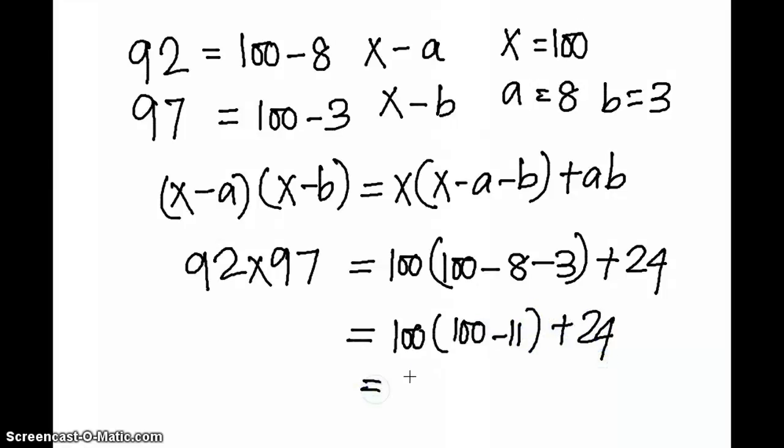This gives me 8,900 + 24, which is 8,924. This is how the whole formula works.